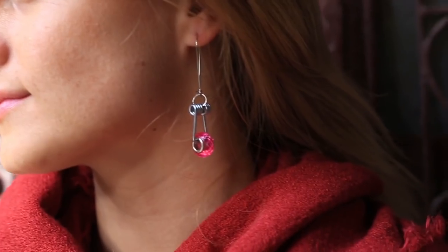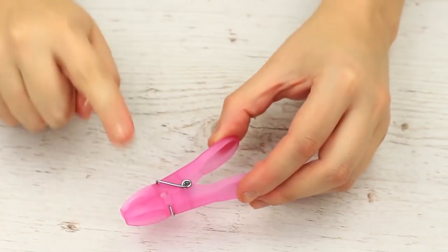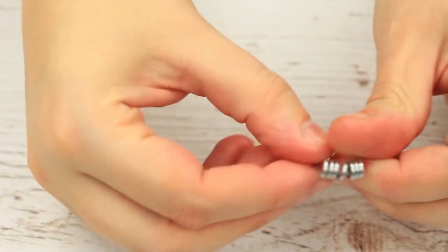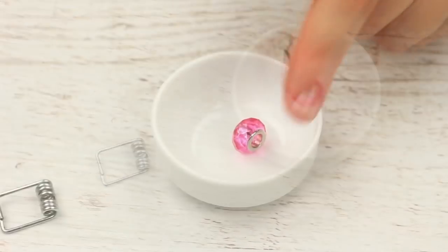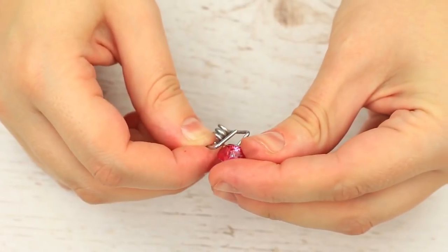You can color the earrings using acrylic paints. Let's make another original pair of earrings using clothes pins. Dismantle the pins to get a spring. Take a bright bead with a big hole. Move the metal ends apart to thread the bead between.